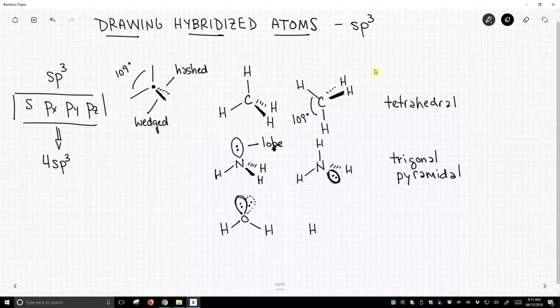But we could draw it differently. We could have a lone pair in the plane coming off the top, and then another lone pair sort of wedged over here, and a hydrogen going back. As long as we have four groups coming off, two are in the plane, two are out of the plane, and our geometry is bent.